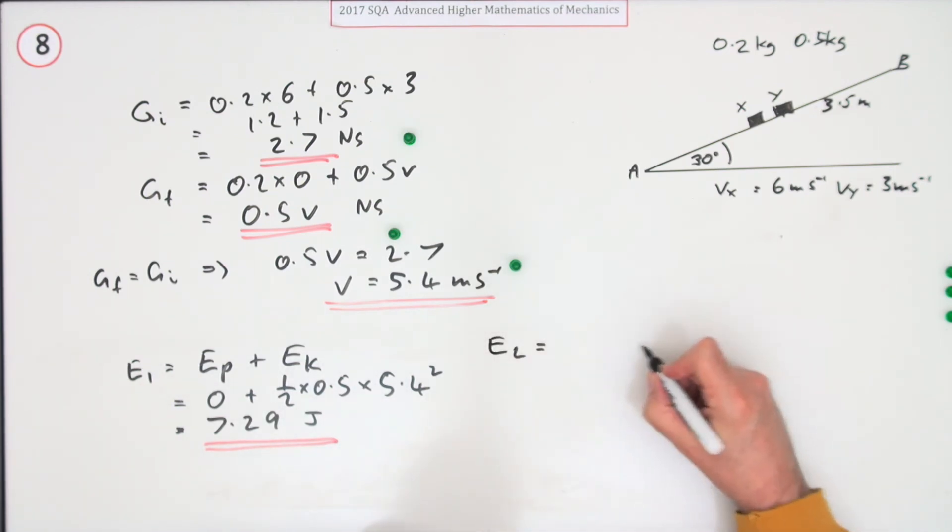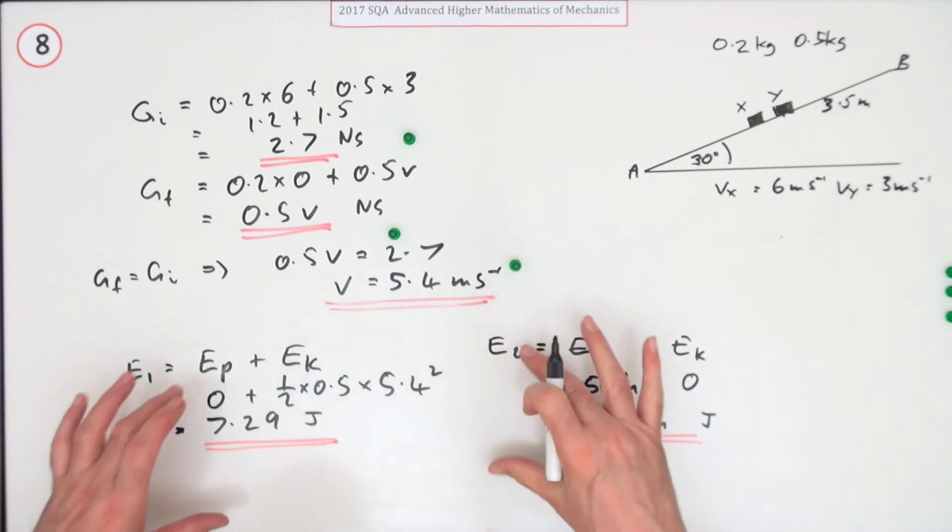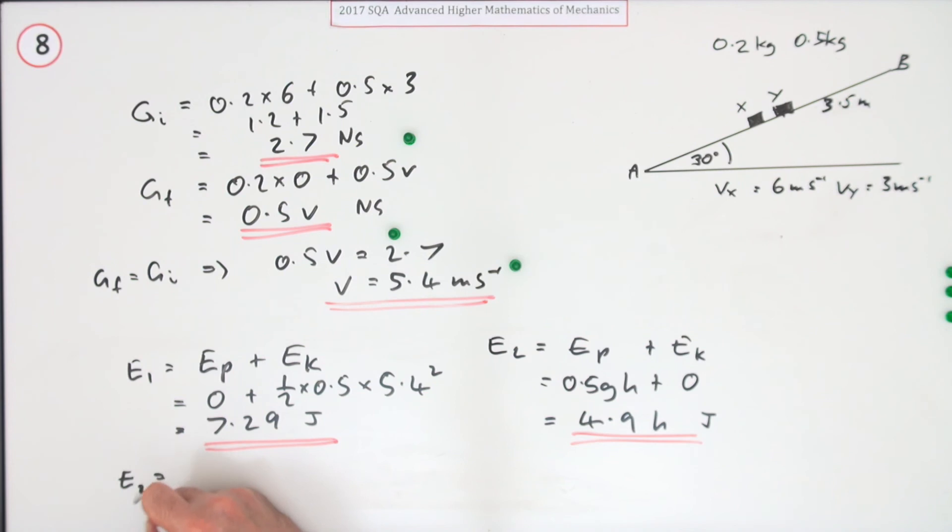E2. In other words, when it comes to a stop. I'll put the two parts in again. When it comes to a stop, so that part will be 0, and this part will be mgh, not 0.5g times h. So that's going to be the 4.9h joules. And then, same as the first part, in fact, it's quite parallel with the first part. E2 equals E1. That means that 4.9h equals 7.29. So h will be 7.29 divided by 4.9, which is 1.4877 and so on metres.